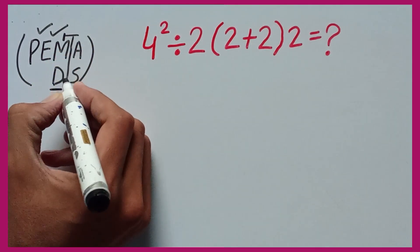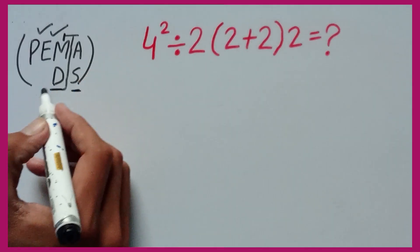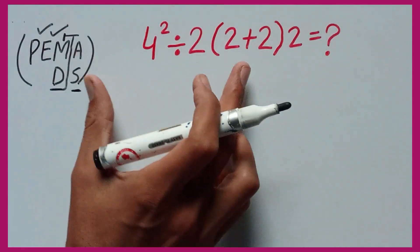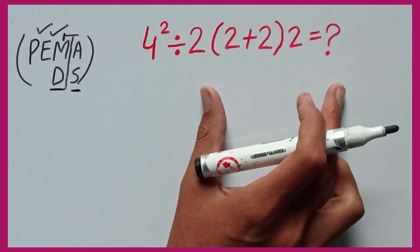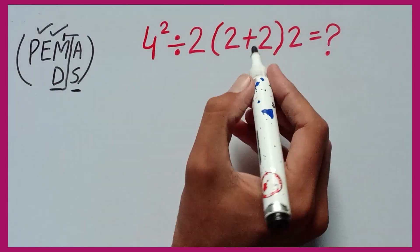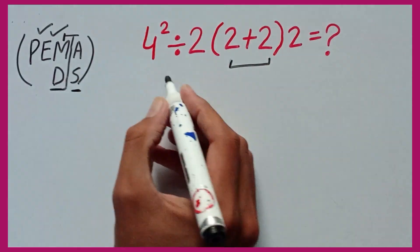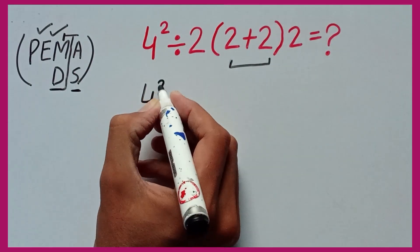So multiplication and division have higher priority than addition and subtraction. So firstly in this question we can solve parentheses. I can rewrite 4² divided by 2 and 2 plus 2.